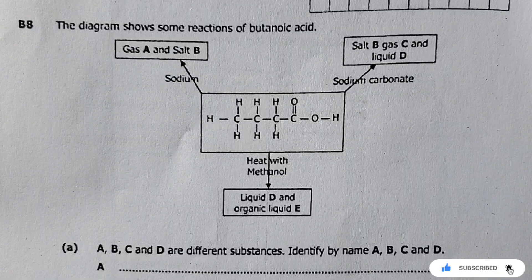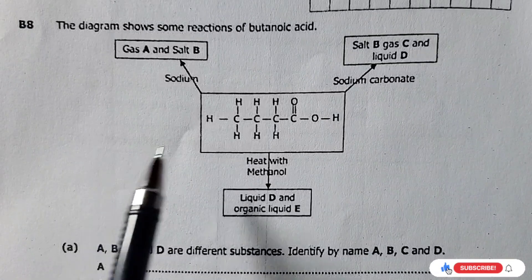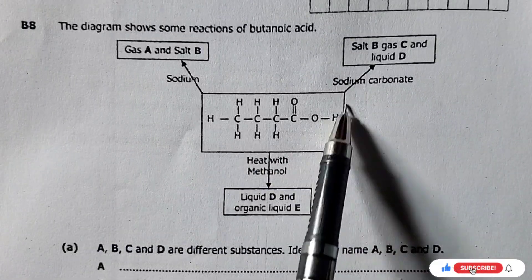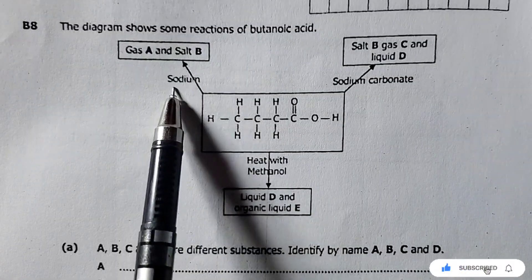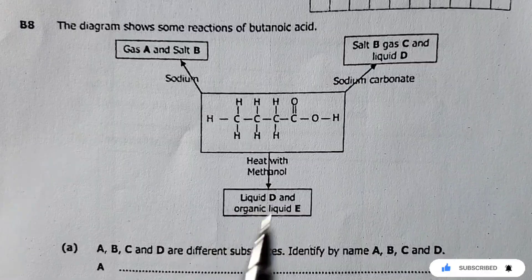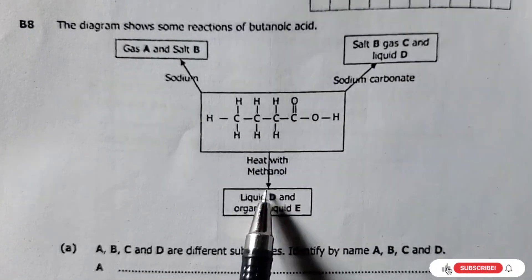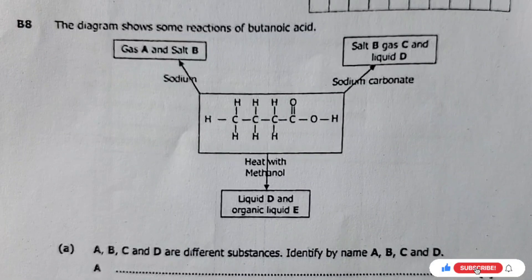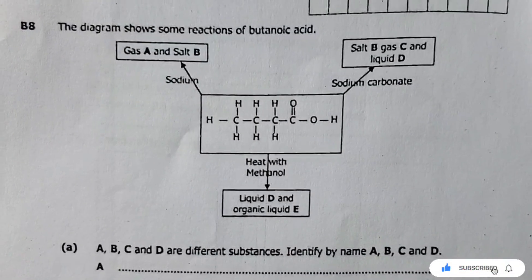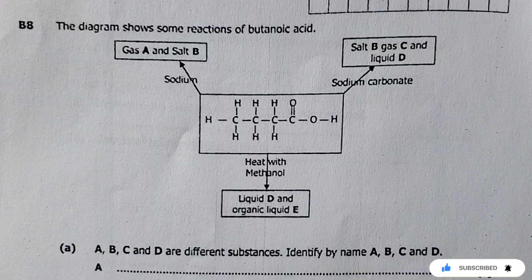The question reads: 'The diagram shows some reactions of butanoic acid.' So you can see here, this is butanoic acid. When it reacts with sodium, this is what is formed. When it reacts with sodium carbonate, this is the product. And when it is heated with methanol, this is what is formed.